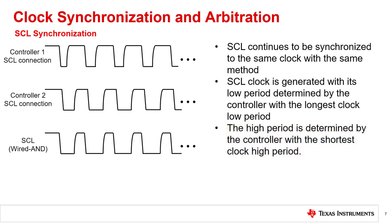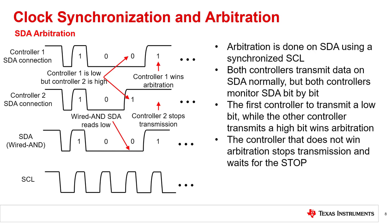Clock synchronization works because the controllers monitor each pulse of the SCL line and react to cases where the SCL line does not match the state that the controller expects. Now that the serial clocks are synchronized, arbitration is done on SDA. Both controllers transmit data normally on SDA, sending their communication to the intended target device. Similar to SCL, SDA is a wired AND connection. Both controllers also monitor SDA for the resulting communication. The first controller to transmit a low bit while the other controller transmits a high bit wins arbitration. With the wired AND connection, the controller that wins arbitration does not have its communication disrupted. The controller device that loses arbitration stops its transmission and the controller device that wins arbitration continues its communication uninterrupted.